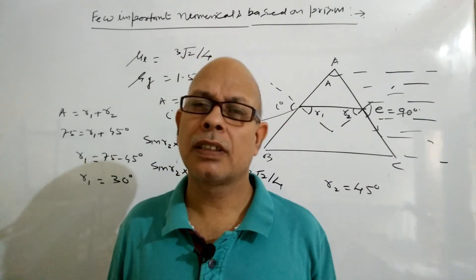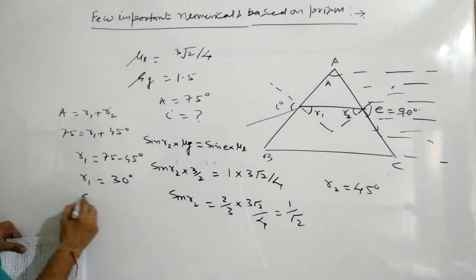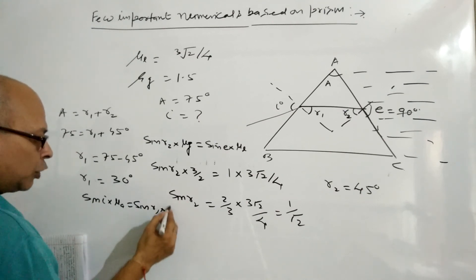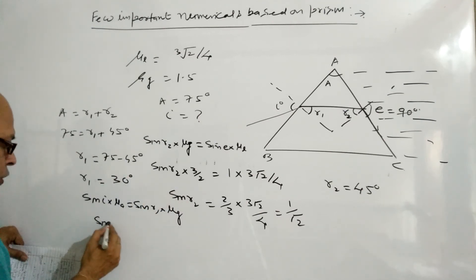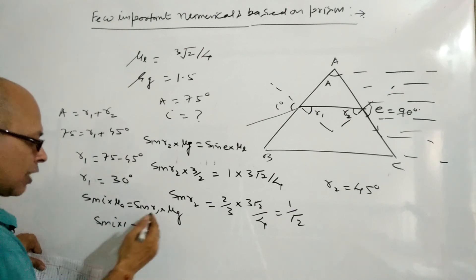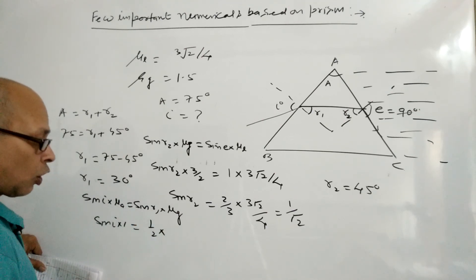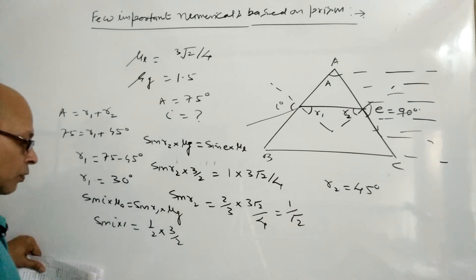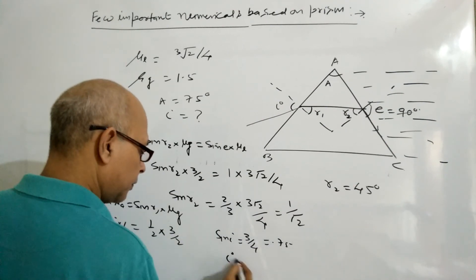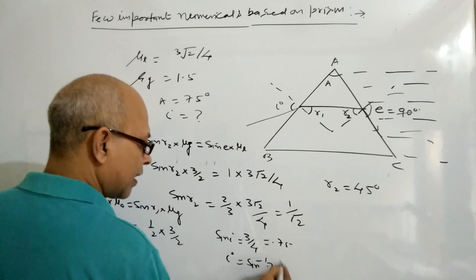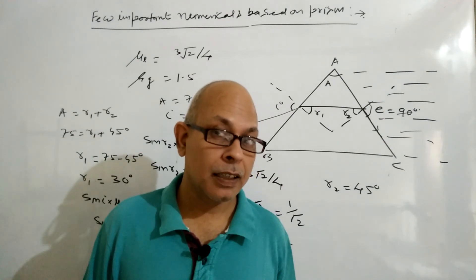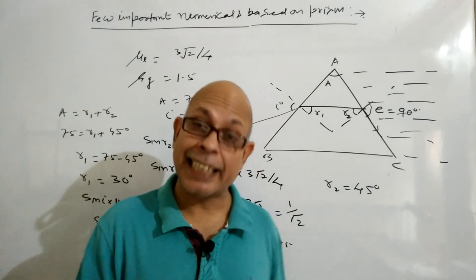Now to find the angle of incidence I, we apply Snell's law again at the clear surface: sin(I) × μ_air = sin(R1) × μ_glass. So sin(I) × 1 = sin(30°) × 1.5 = (1/2) × 1.5. Therefore sin(I) = 3/4 = 0.75, and I = sin⁻¹(0.75) ≈ 48.6°.